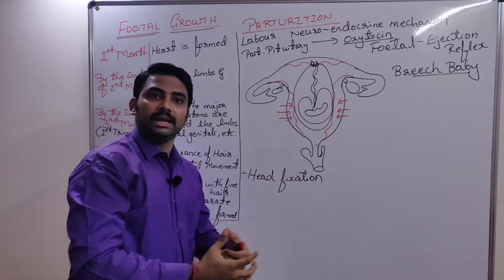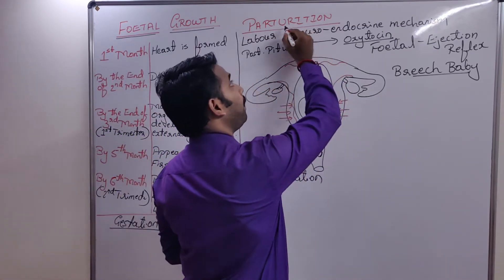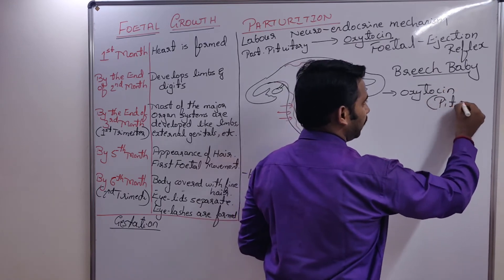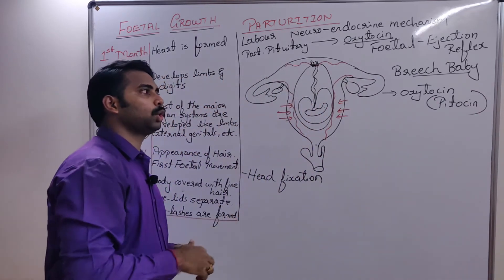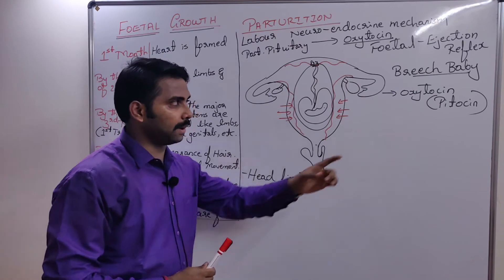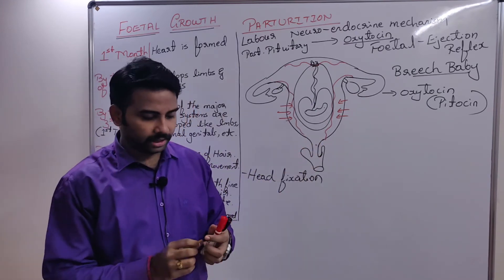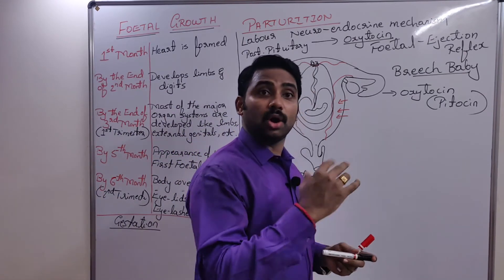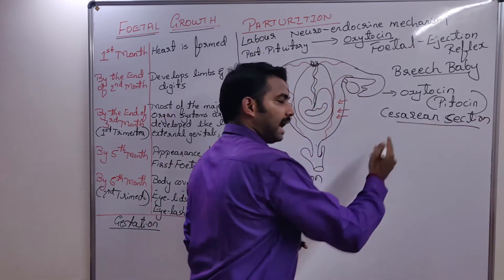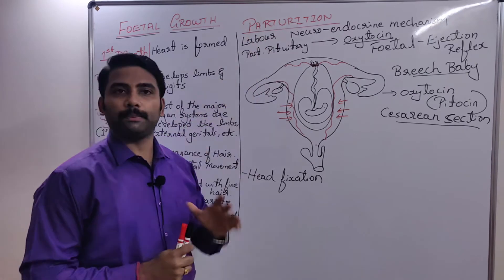If the mother is ready for delivery but contractions are not sufficient, to induce parturition you give an injection of oxytocin — the commercial name is Pitocin. If normal delivery is still not possible, a caesarean section is performed by cutting the abdominal wall to take the baby out.